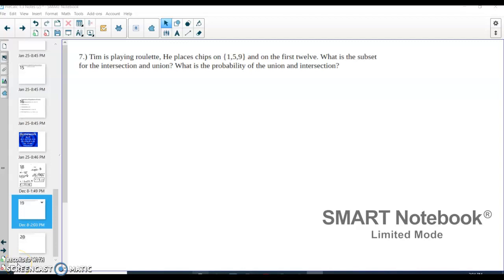Here is a video for problems 7 and 8, the last two problems on our Chapter 4 review. This first one is going to be the roulette problem, similar to what we saw in Lesson 4-2-4. We have two sets happening here. We have the first subset already listed.